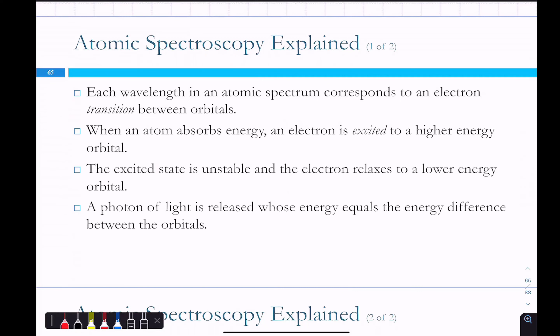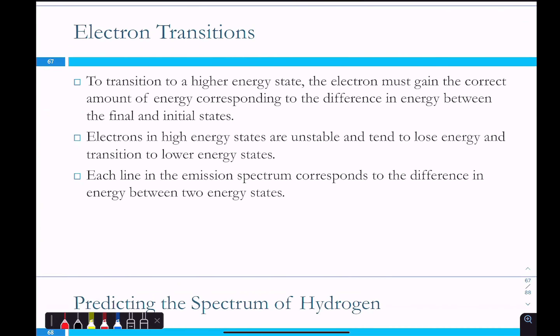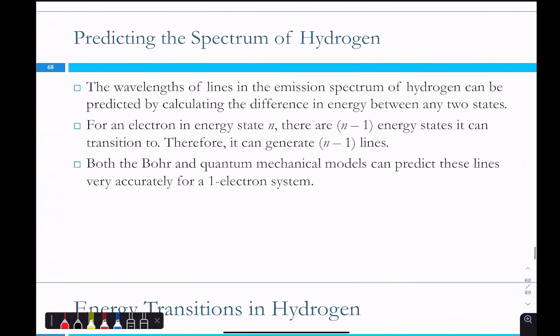This is the atomic spectroscopy connection. These orbitals have different energy levels, which is why we do electron configurations and fill them in that order — they have different energies. If an electron is excited to a higher energy level and then relaxes back down, that relaxation corresponds to a specific wavelength in the atomic spectrum. We're bouncing between those orbitals: excitation to a higher energy level means the electron is unstable, so it loses energy, goes back to a lower state, and releases energy as a photon. Each line in the spectrum corresponds to one of those energy-level transitions.